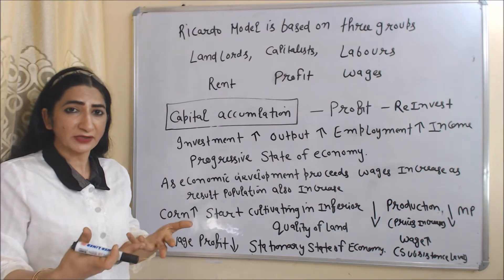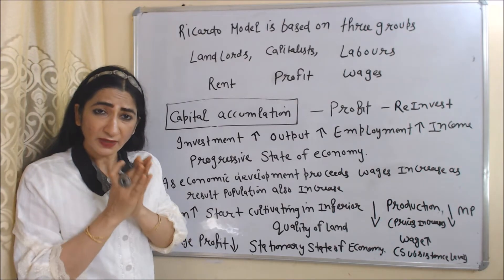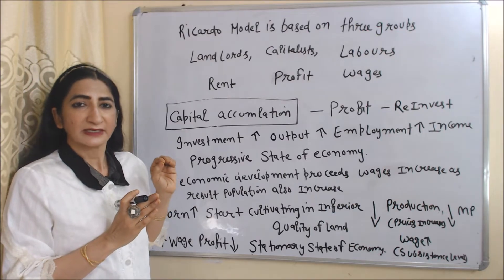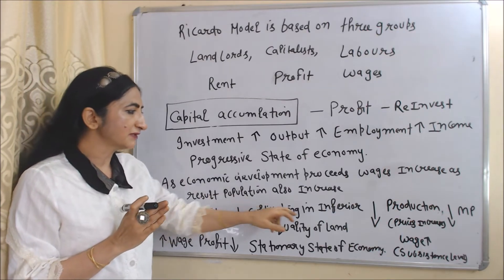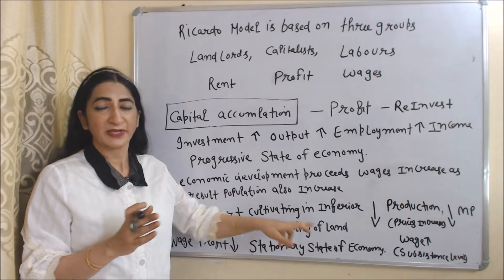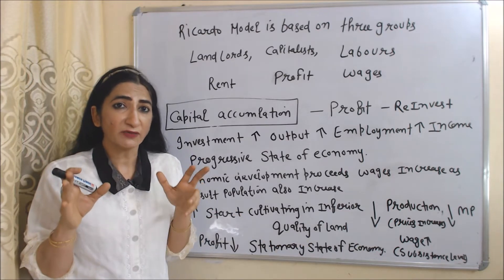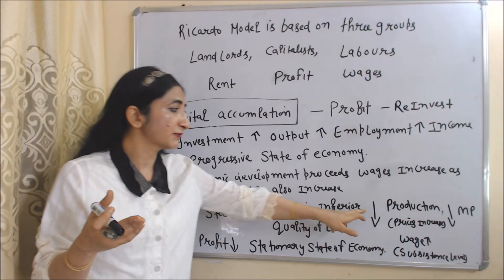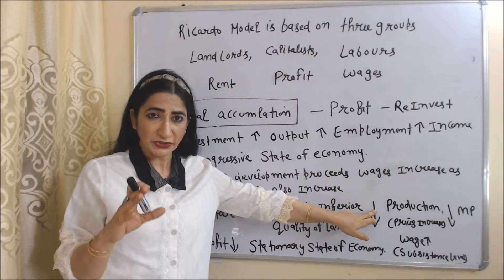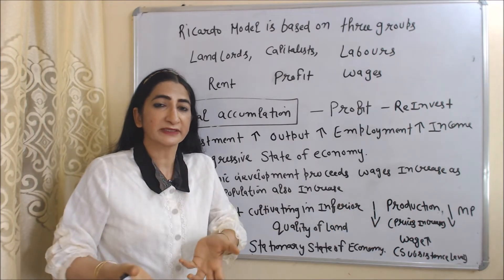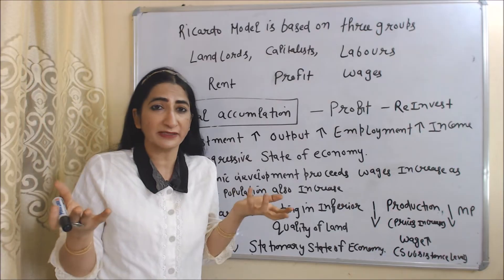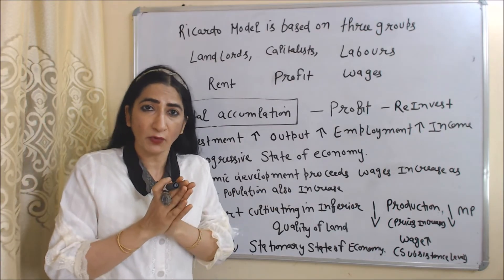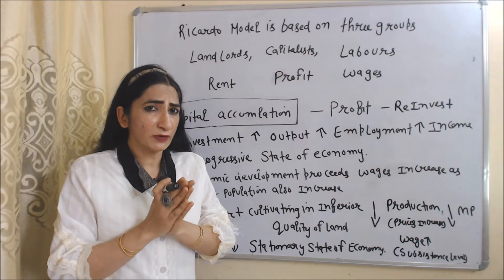That means we start to increase production of corn. But supply of land is fixed, so we start cultivating inferior quality land. The productivity of inferior quality land is very low, so our production will fall. If production of corn falls but demand is high, prices of food grain will increase — or we can say the prices of corn will increase.